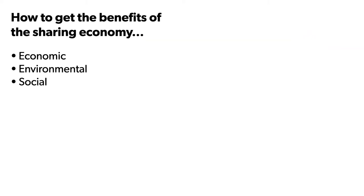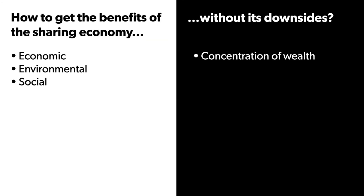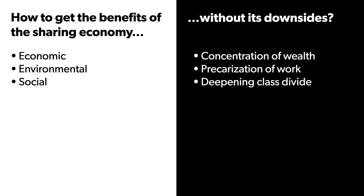All these examples show that when you build a giant platform using lots of venture capital money, you can end up in a structure where that money starts controlling your next actions. The original mission can quite easily become distorted, even if the founders were very mission-driven from the beginning. So we really started thinking: how do we get the genuine benefits of the platform economy — the economic, environmental, and social benefits — without the downsides? Without the concentration of wealth, the precarization of work, and the deepening of the class divide?